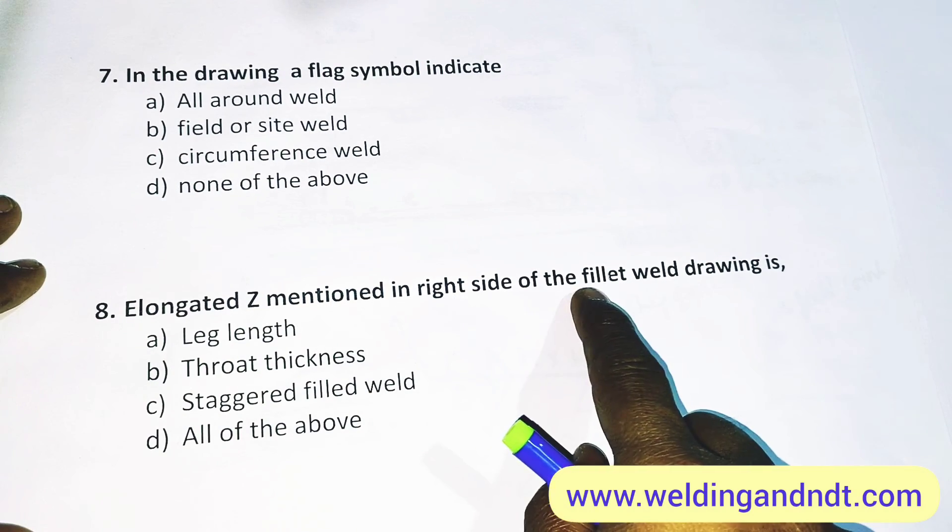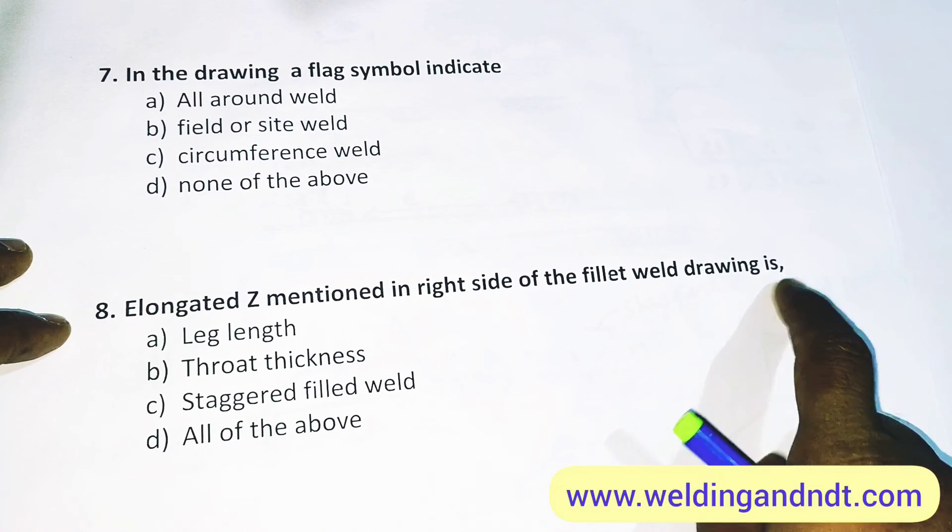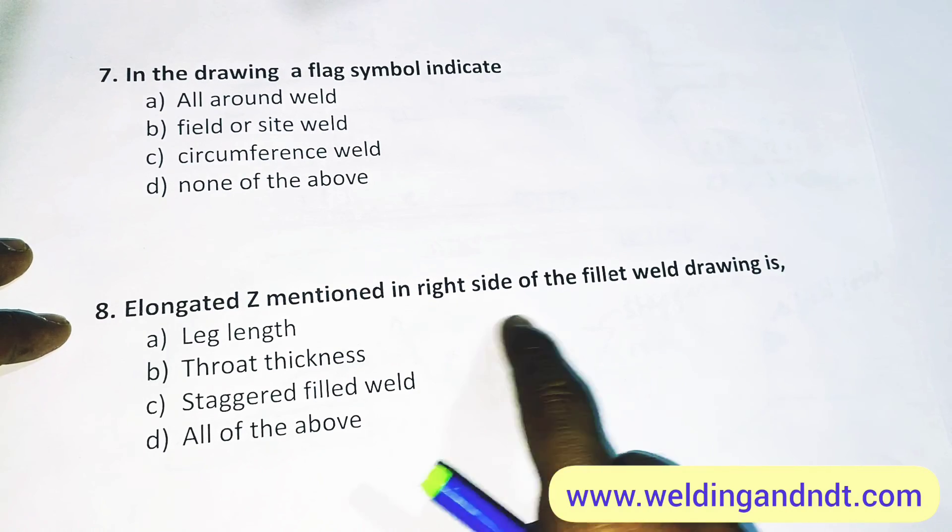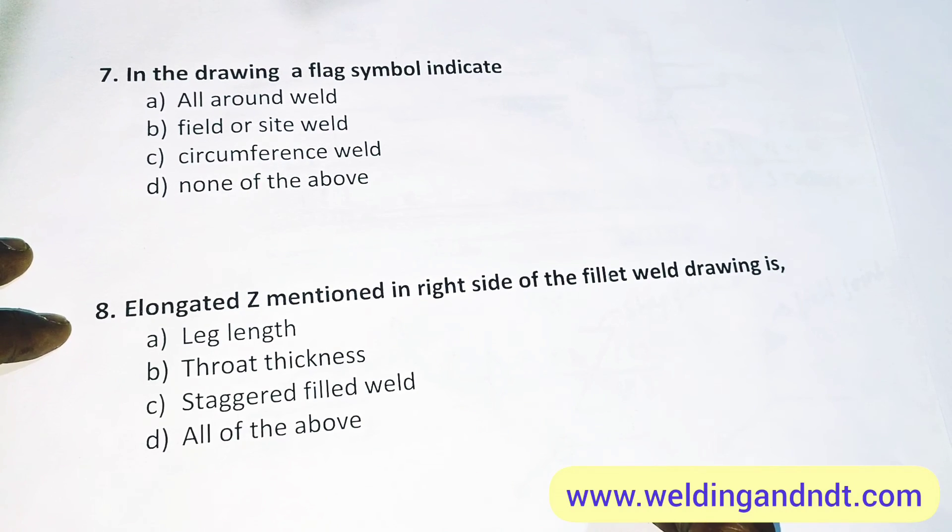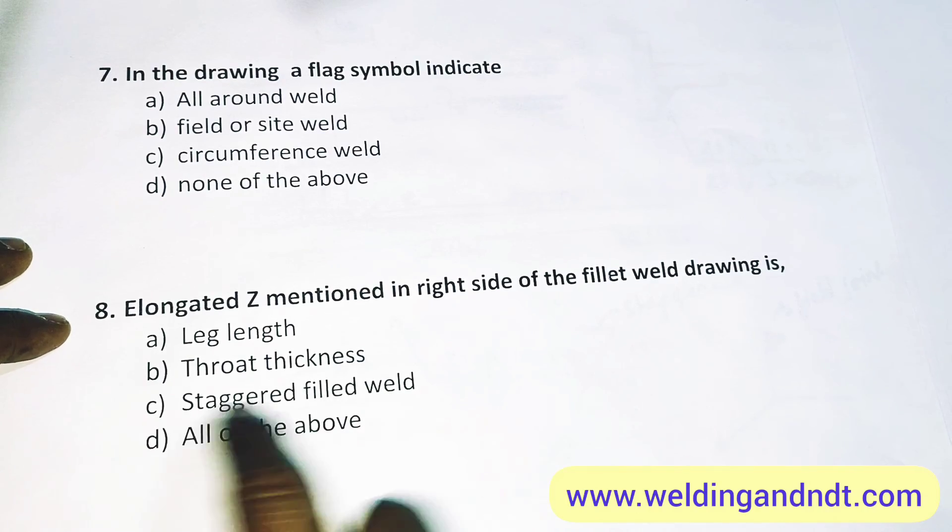Elongated Z mentioned in the right side of the fillet welding drawing is... See, I explained you the elongated Z is nothing but the staggered fillet welding. So C will be the answer.